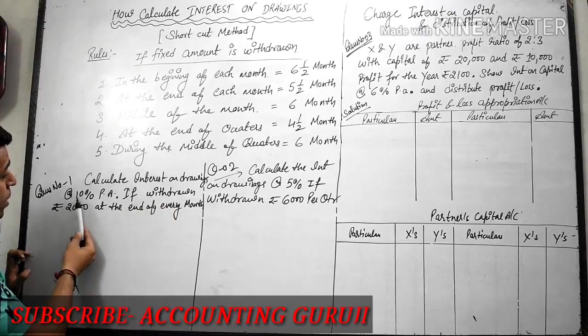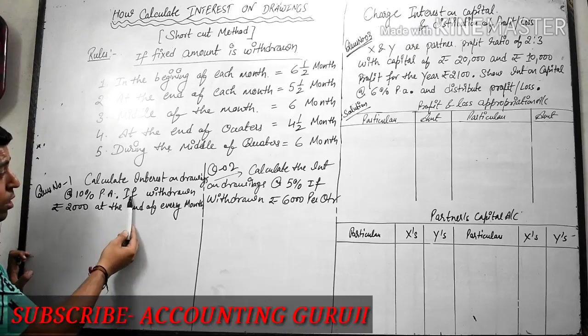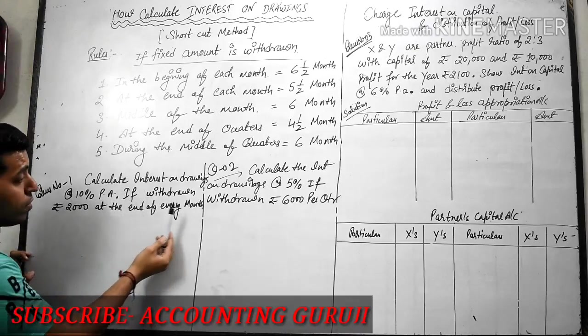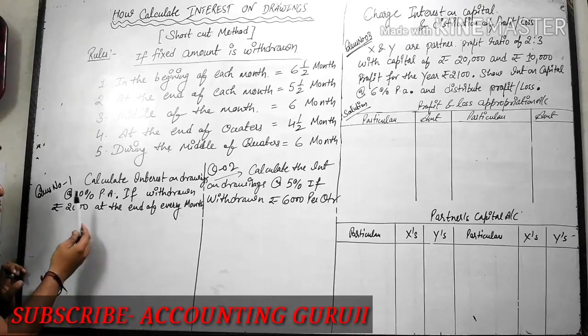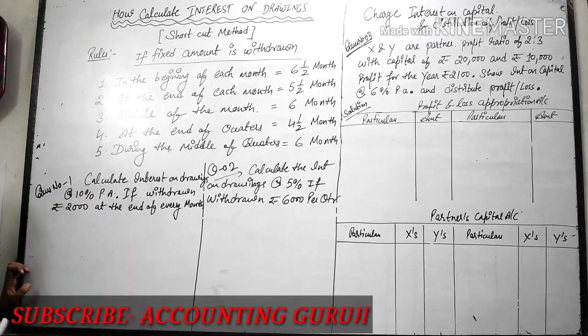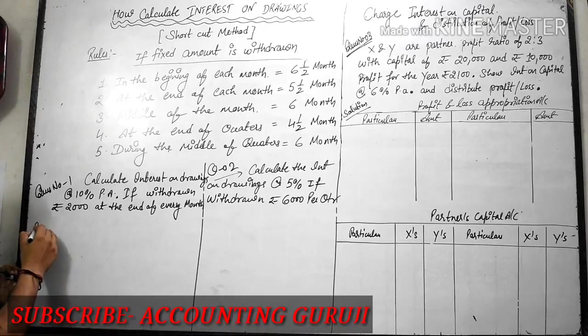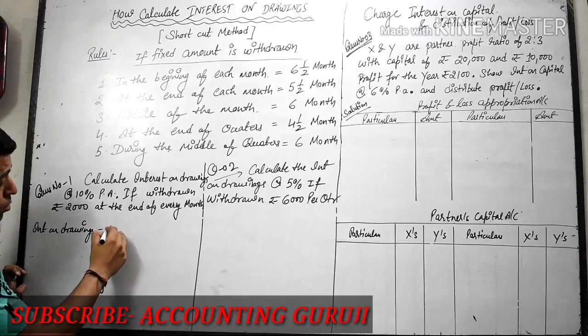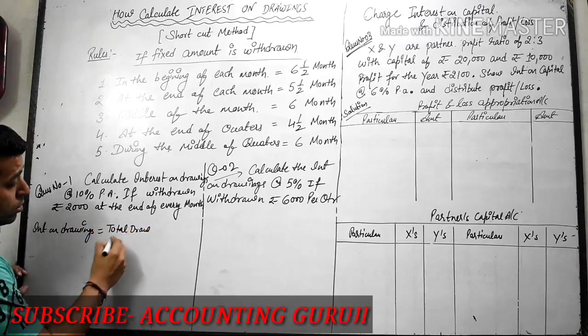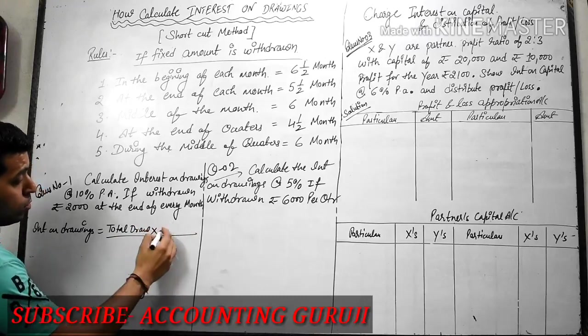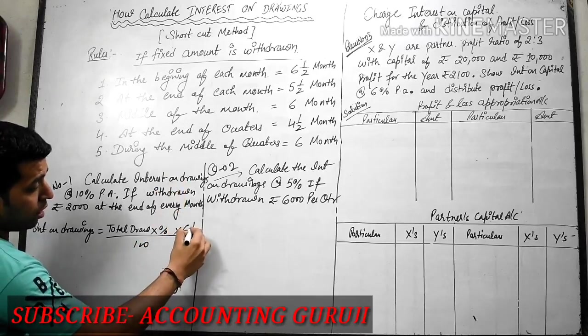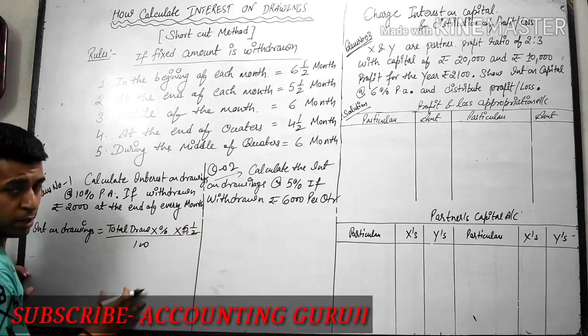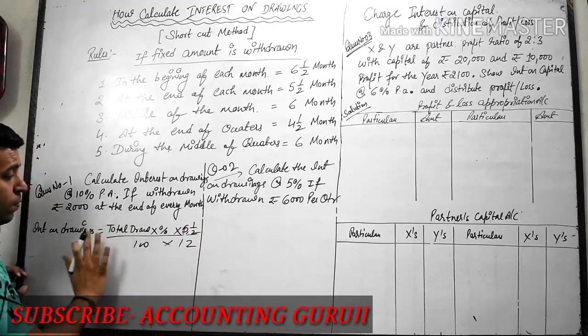Calculate interest on drawings at 10% per annum if a partner withdraws rupees 2,000 at the end of every month. So guys, 10% is the rate. How much interest on drawings? First, let me tell you the formula of interest on drawings. That is total drawings into percentage upon 100 into months, if it is 6.5 or 5.5, then divided by 12. This formula is available.